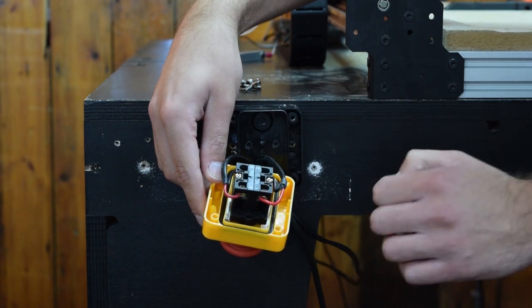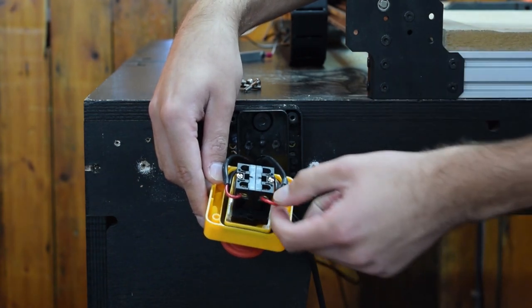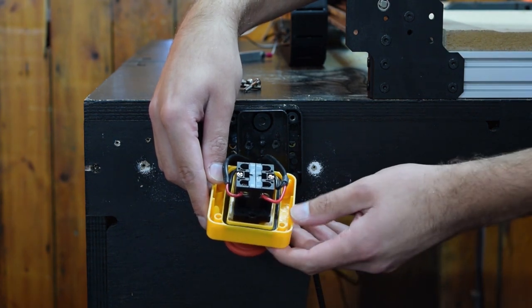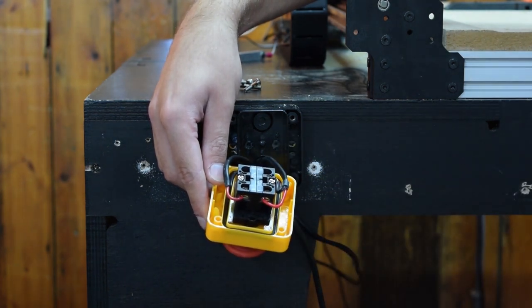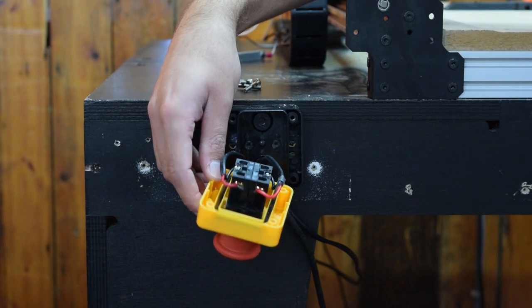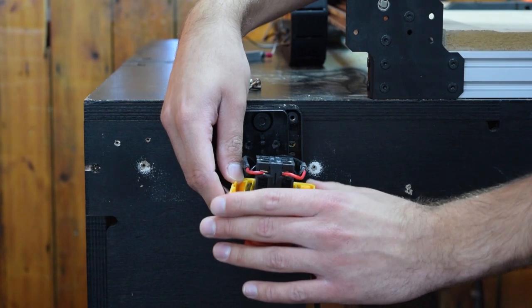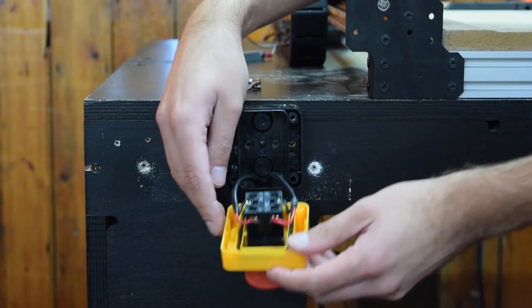On the normally closed side, we have this red wire. And this comes from the emergency stop input on the controller. And this black wire goes to the ground on the controller. So when this is hit, it sends a signal to the board to kill the process and thus stopping the machine.